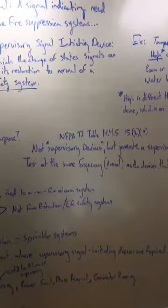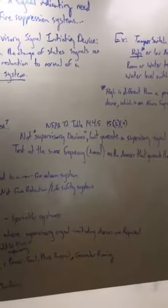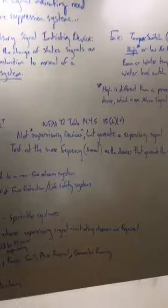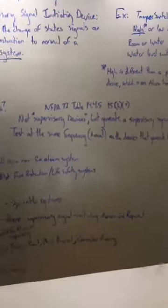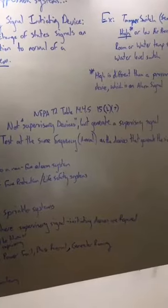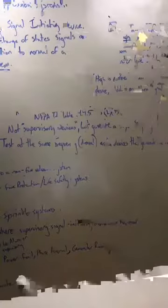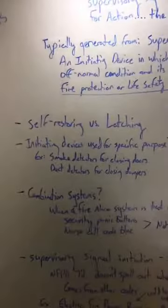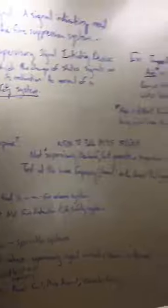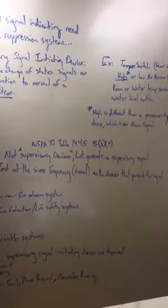These are not supervisory devices. They just generate a supervisory signal. So they are tested at the same frequency annually as the devices that generate the signal. So smoke detectors are required to be tested annually, so the signal associated with it is required to be tested annually. Even though it produces a supervisory signal, it's not required to be tested quarterly.